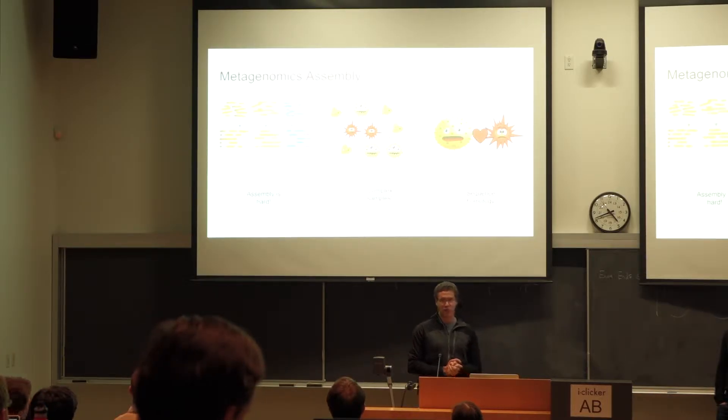With metagenomics, you have complex samples. You don't know the individual constituents of your sample. So, figuring out which reads go together can be difficult. And one of the reasons is because of sequence homology between individual genomes.